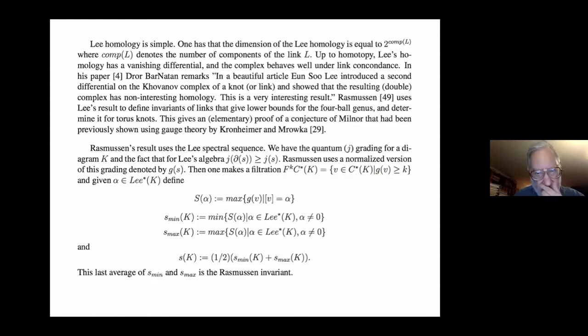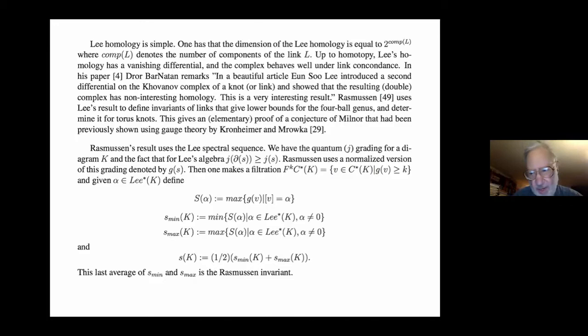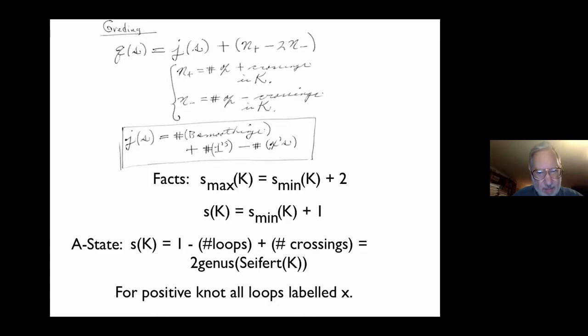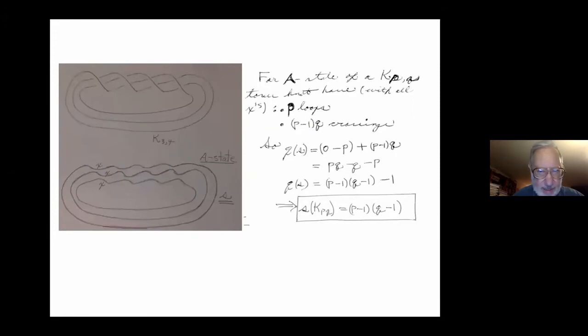Rasmussen's invariant has cobordism invariants associated with it, and he was able to give an elementary proof of Milnor's conjecture about the four-ball genus of torus knots: the four-ball genus of the torus knot T(a,b) equals (a−1)(b−1)/2 — the same as the Seifert genus in three-space. This very interesting comparison between Lee homology and Khovanov homology allows one to conclude such things.